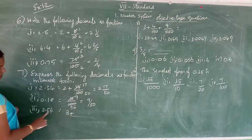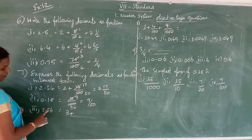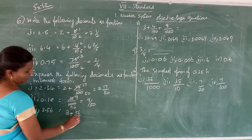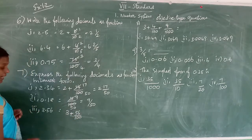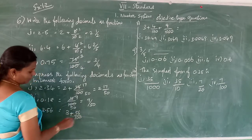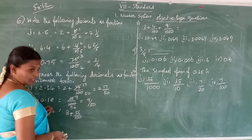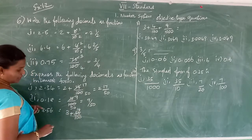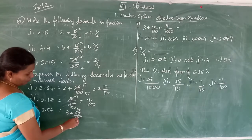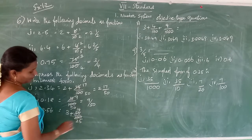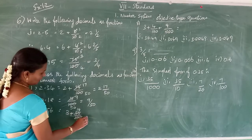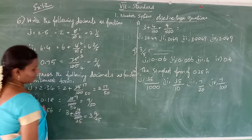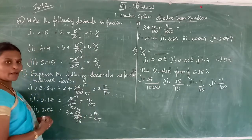See the third one: 3.56. The whole part is 3. The decimal part — 5 is in the tenths space, 6 is in the hundredths space — so write 56 by 100. Cancel with the 4 times table: 56 divided by 4 is 14, 100 divided by 4 is 25. Answer: 3 and 14 by 25.